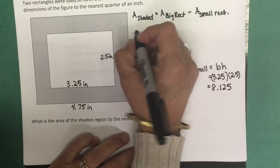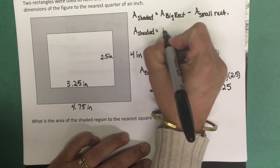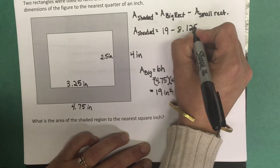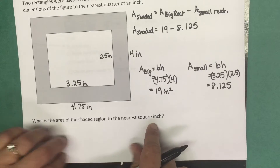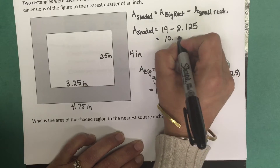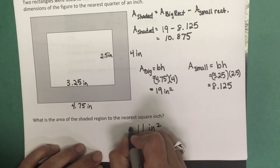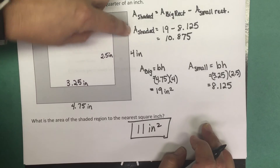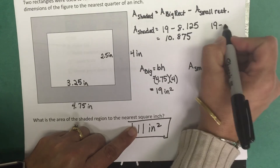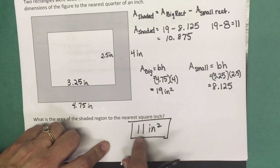Now we go back to our original formula: the area of the shaded region equals the area of the big rectangle minus the area of the small rectangle — that is 19 minus 8.125, which gives us 10.875. To the nearest square inch, that rounds to 11 square inches. Alternatively, since we wanted the nearest square inch, we could have done 19 minus 8, which also gives us 11 square inches.